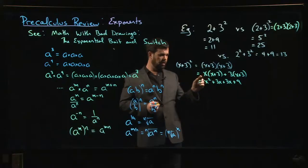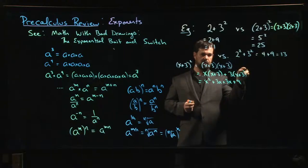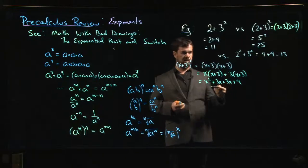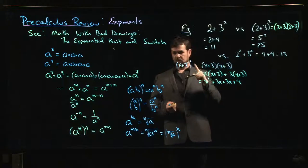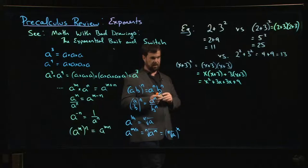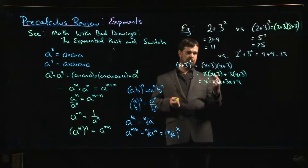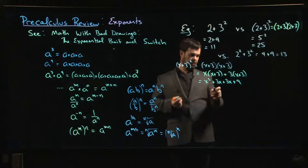The only downside with relying on something like FOIL is, what if there was another term here? What if this was x² + 2x + 3? FOIL's nice, but it only deals with one situation among many. It's a common situation, that's why we have an acronym, but there are lots of other situations that can come up. So it's nice to remember you can do this even if you forget FOIL.